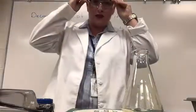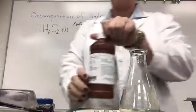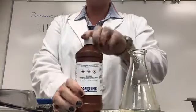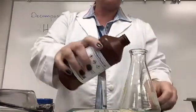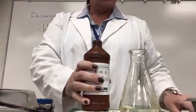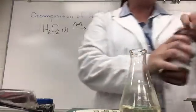Alrighty, let's get started. In my Erlenmeyer flask here, I'm going to add some hydrogen peroxide, and this is 30% hydrogen peroxide. This is a little bit more concentrated than what you would buy in your regular pharmacy. Usually it's 3%, but this comes from a specialty store.